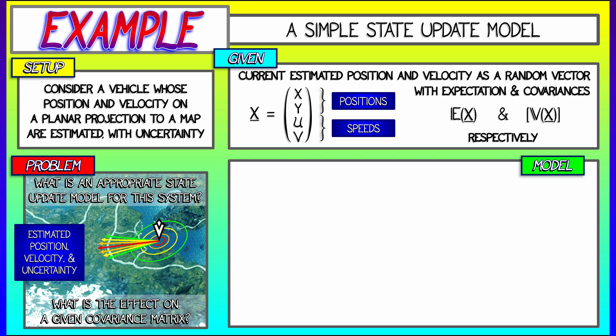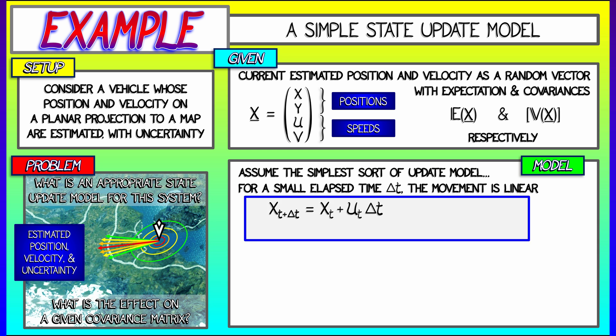Now, a good state update model would be really simple. Let's say I have some change in time, delta t, maybe a minute or an hour or a second. And then I just move my positions forward based on speeds. So if I know my x coordinate at time t, then my x coordinate at time t plus delta t is where I'm at, xt, plus the horizontal speed, ut, times delta t. That's a simple update for x.